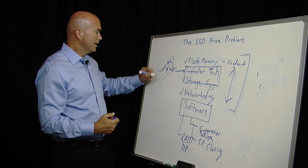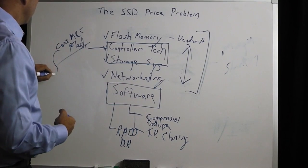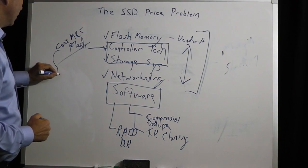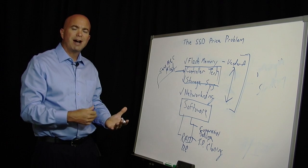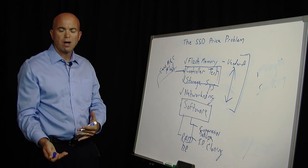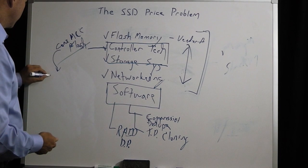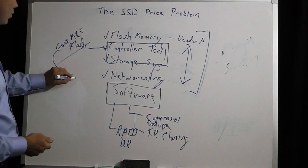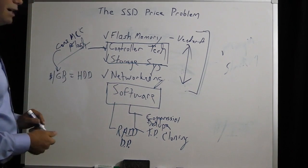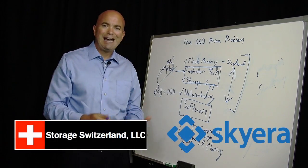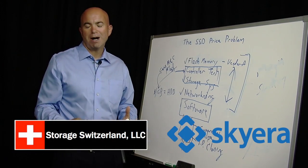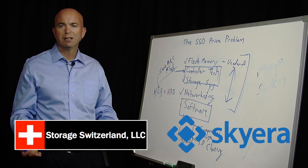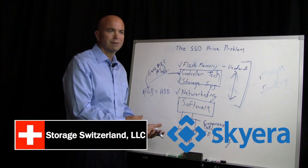What we think will happen is that by using their own controller technology, they can also move to smaller lithographies. The smaller the lithography of the flash, the more cost-effective it is. And we eventually think that very soon we'll see parity with hard drive-based systems at a dollar per gigabyte level. At that point, you can afford to go buy solid state for the entire enterprise, not have to go through a complex cost-justification strategy, and just start deploying the fastest storage possible.